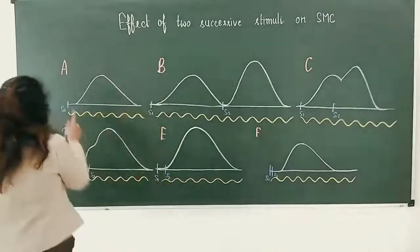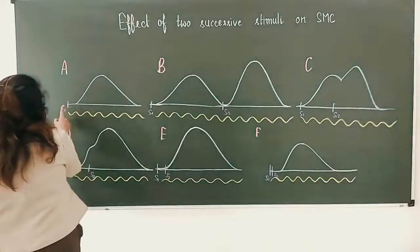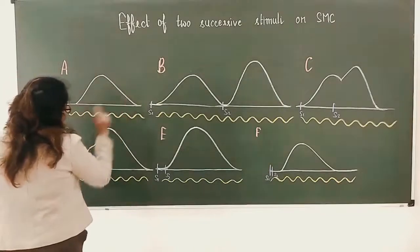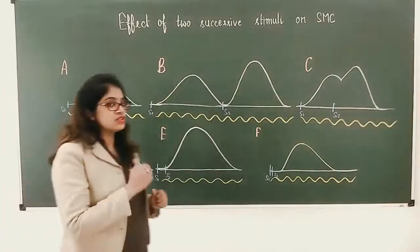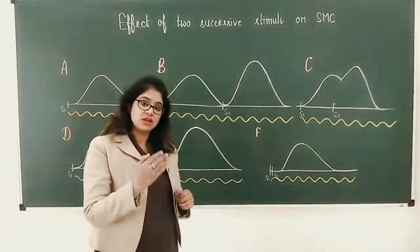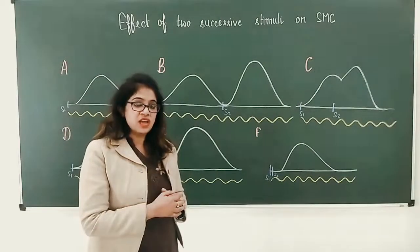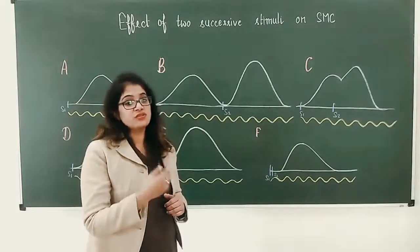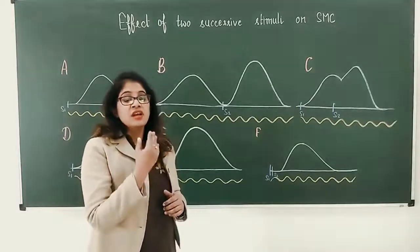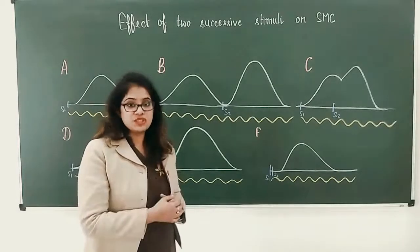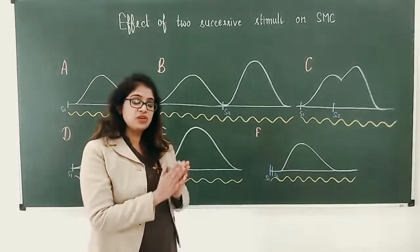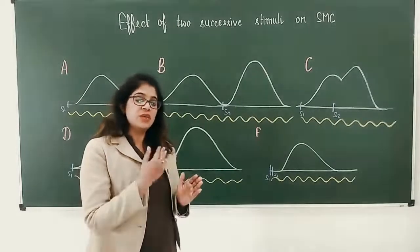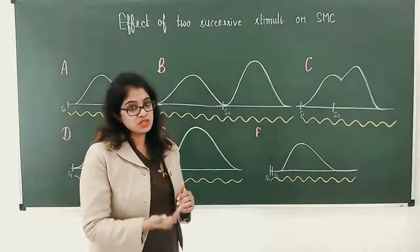Here we can see this is the first stimulus S1 and we obtained the curve. In this practical we have given supra-maximal or maximal stimuli, because we are not going to study the effect of the strength of stimulus — we are going to study the summation of stimuli. So we have to give stimuli of similar strength, and for that it is better to use supra-maximal stimuli.